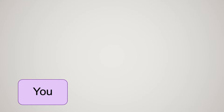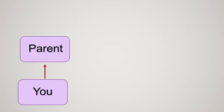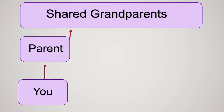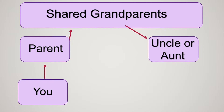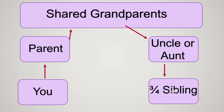We'll start this chart off with you and we need to follow up two more generations. We go through your parents and then up to your shared grandparents — these are the grandparents that you and your three-quarter sibling are related to. Dropping down a generation we get to your uncle or aunt, who must be a full sibling of your parent. Now, your uncle or aunt's child would normally be your first cousin, but in this aspect they are your three-quarter sibling.